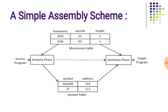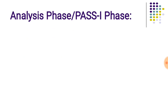The assembler uses two phases: the analysis phase and the synthesis phase. Sometimes the analysis phase is referred to as pass one, whereas the synthesis phase is referred to as pass two. Synthesis phase is always followed by analysis phase. In the analysis phase, the assembler generates a symbol table and references the mnemonics table or opcode table. In the synthesis phase, it converts assembly language into machine language, referred to as the target program.